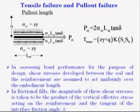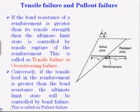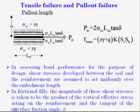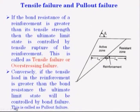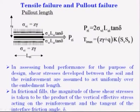The next part of this lecture is tensile failure and pullout failure. First part is your pullout length. If you come back to last class, there are two zones: one is the active zone and the other is the resistant zone. L_EI is acted upon by this resistance zone.